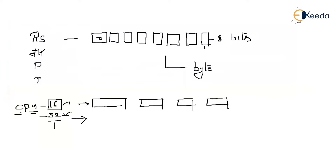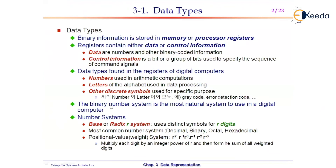Nowadays we don't see 8-bit computer systems — we see 32-bit or 64-bit systems. For that, we collect 4 or 8 bytes. Going back to data types: data is simply numbers and other binary-coded information.